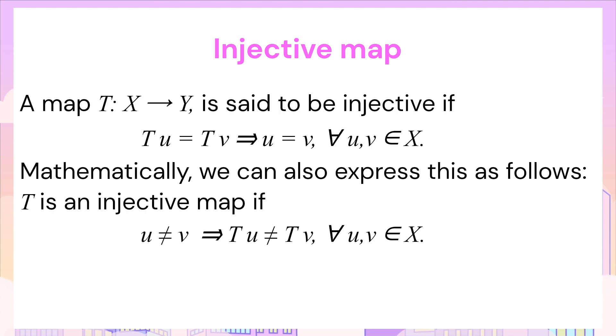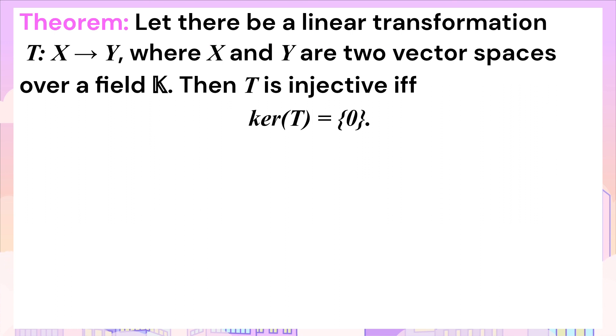We can also define this by using the contrapositive of this definition, which means that no two different elements in the domain have the same image in the codomain. Now let's prove why the kernel of an injective map is just singleton zero.